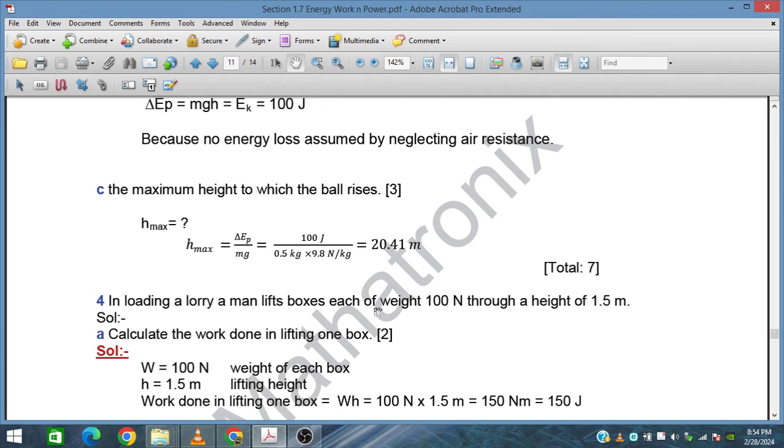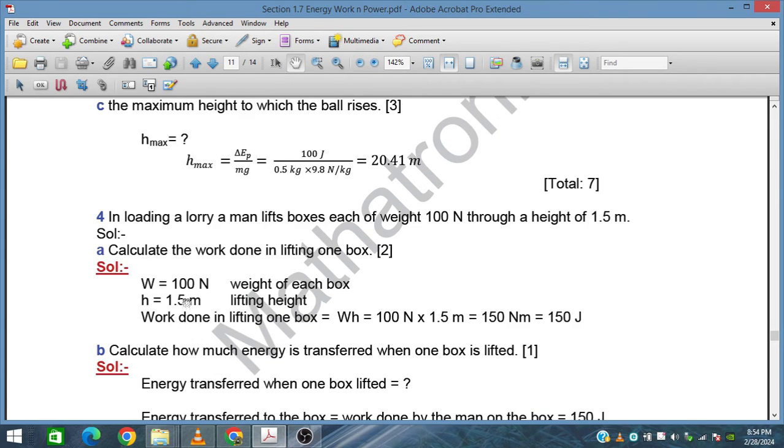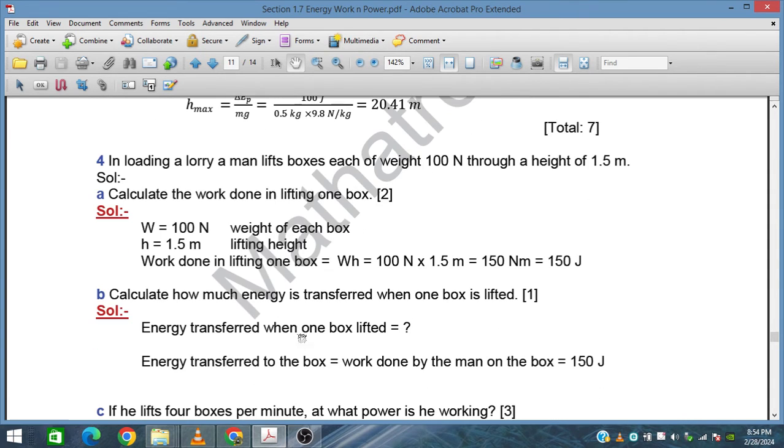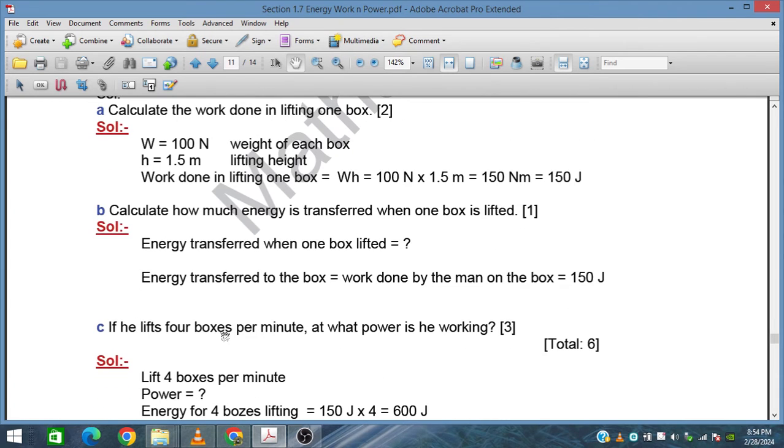In loading a lorry, a man lifts boxes each of weight 100 newtons through a height of 1.5 meters. Calculate the work done in lifting one box. The weight of the box is 100 newtons, height is 1.5 meters, so work done on one box is 100 N × 1.5 m = 150 joules. Calculate how much energy is transferred when each box is lifted. Energy transferred when one box is lifted equals the work done by the man on the box, which is 150 joules.